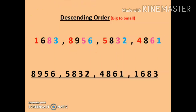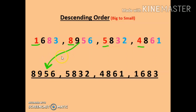First rule: count the number of digits — all four numbers have 4 digits, so the number of digits is the same. We then look at the thousands place: 1, 8, 5, and 4. Out of these, 8 is the biggest number, so we will write 8956 at first place.